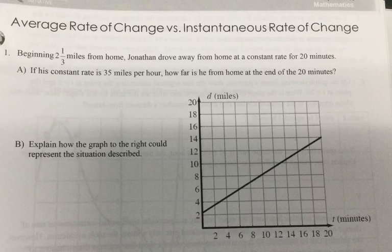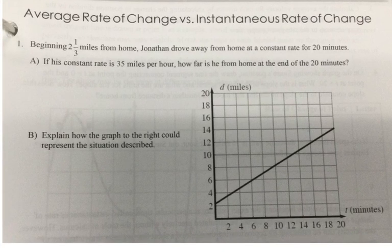This is beginning two and a third miles from home. Jonathan drove away from home at a constant rate for 20 minutes. If his constant rate is 35 miles per hour, how far is he from home after 20 minutes?